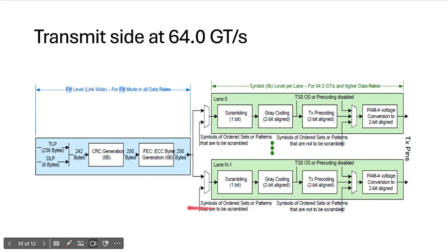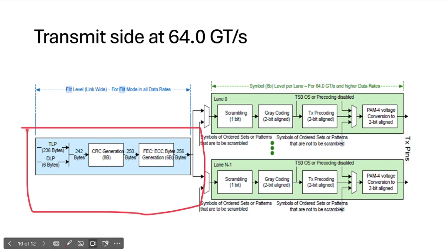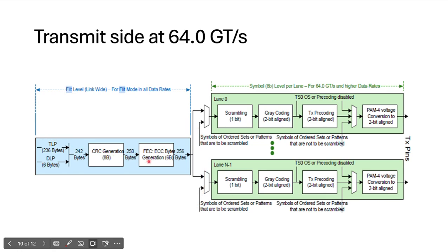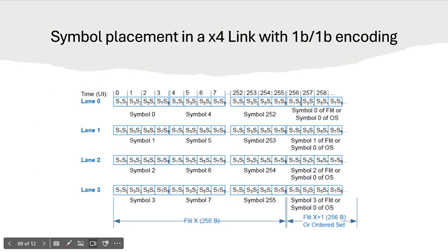The transmitter logic includes: scrambling, gray coding, pre-coding, PAM4, and CRC generation with Forward Error Correction. In previous generations, LCRC generation and sequence numbers were inside the data link layer. But for Gen 6, CRC generation and Forward Error Correction are generated inside the physical layer itself. This concludes the introduction to PCIe Gen 6.